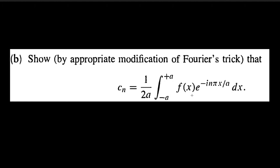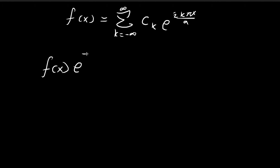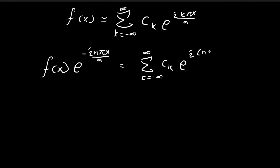So now we need to prove that cn is equal to this integral. To do that, we start with the Fourier series expression where k goes from negative infinity to infinity: the sum of ck times e to the power of i k pi x divided by a. We do something similar to Fourier's trick — we multiply both sides by an e factor, where n is some arbitrary integer. Multiplying on the right-hand side, we absorb this into the exponent, and then integrate both sides from negative a to a with respect to x.